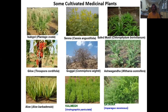Some of the major cultivated medicinal plants include: Isabgul (Plantago ovata), Senna (Cassia angustifolia), Safed Musli (Chlorophytum borivilianum), Giloy (Tinospora cordifolia), Ashwagandha (Withania somnifera), Aloe Vera (Aloe barbadensis), Kalmegh (Andrographis paniculata) and Shatavari (Asparagus racemosus). These are extensively cultivated in our country.